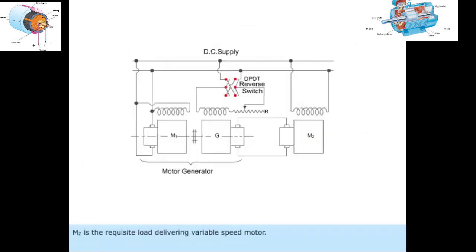For variable speed motor operation, M1 is the motor, G is the generator of the converter set. The variable output voltage of the generator is achieved by varying its excitation by means of the shunt regulator rheostat R.